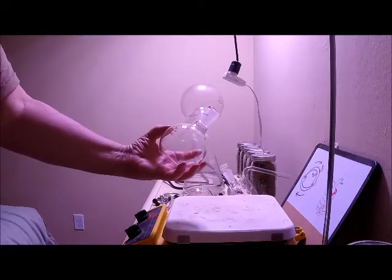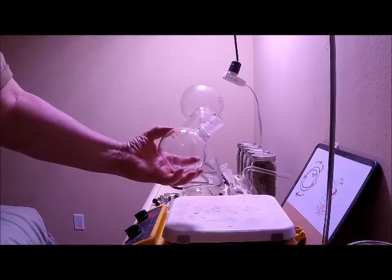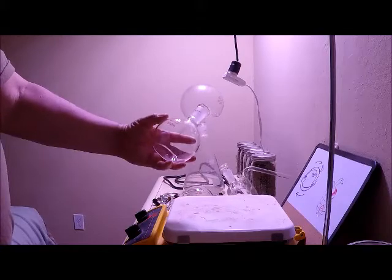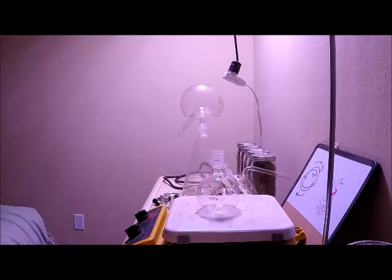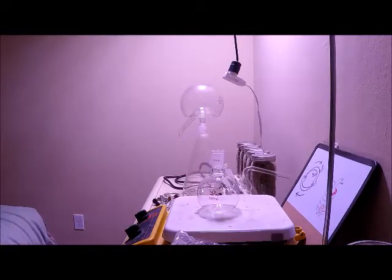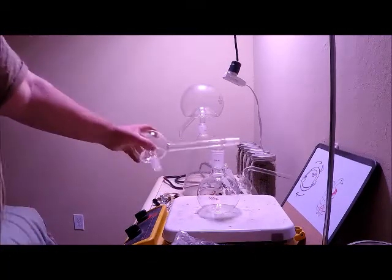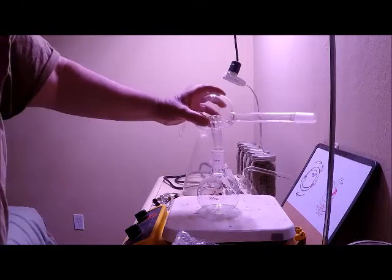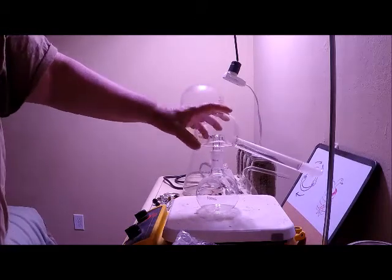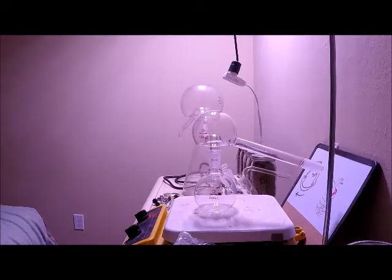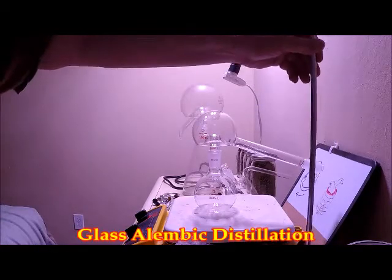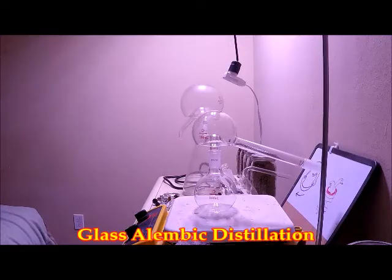There we go. 500 ml flat bottom round flask, 24/40 ground joints. And what goes on to that? My limbic distillation head. Nice. Interesting. And there's the clamp stand in case I need that.